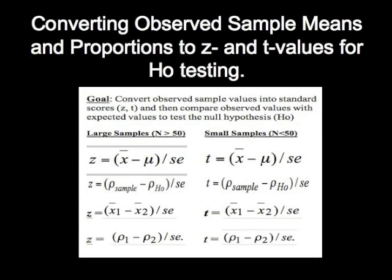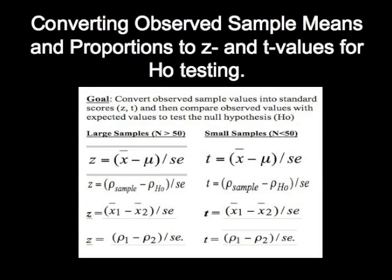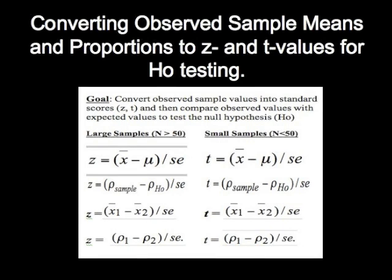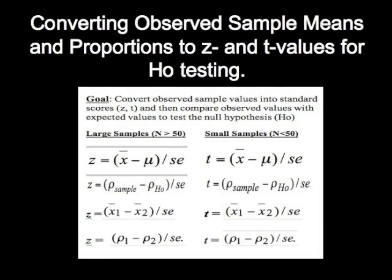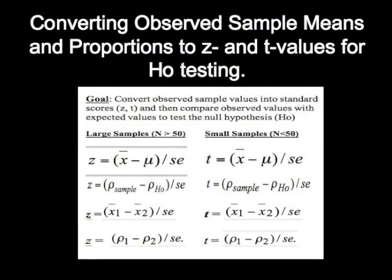That in turn allows you to make a comparison between your observed sample values and your expected sample values based on your null hypothesis, and therefore being able to reject or not reject the null hypothesis after you consider sampling error, which is measured by the standard error of these estimates.